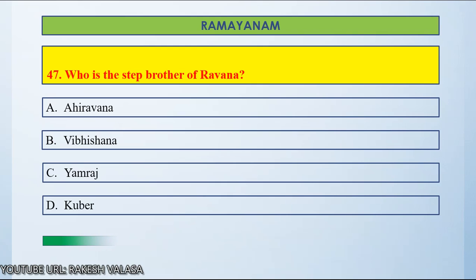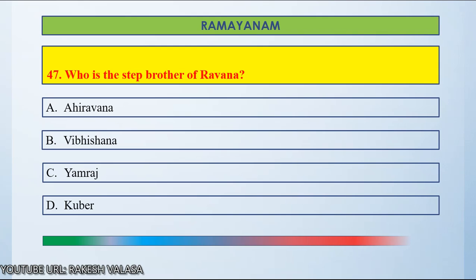If you know the answer, please post in the comment section. Time up. The answer is Kuber. Kuber is the step brother of Ravana.